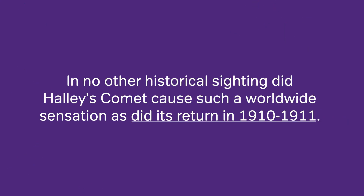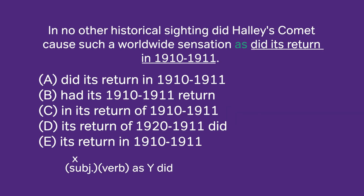This one about Halley's Comet involves some tricky parallelism. Normally when we see 'as,' we expect that to be followed by a subject and a verb — so subject X and then verb, as Y did. That would be a correct comparison between X and Y. But here we're talking about the return, and we don't want to compare the return to the subject, Halley's Comet. We're not comparing Halley's Comet to its 1910–1911 return; we're comparing the other historical sightings to that return. So that's completely different.